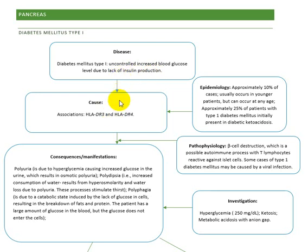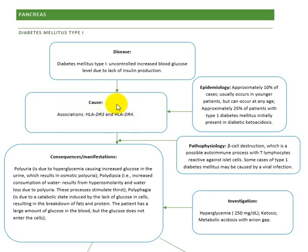In Type 1 diabetes, the genetic cause involves HLA-DR3 and HLA-DR4 inside the beta cells. Upon having a viral infection — such as mumps, coxsackie virus, or measles — there can be release of HLA-DR3 and HLA-DR4, which enhances the destruction of the beta cells, resulting in Type 1 diabetes.